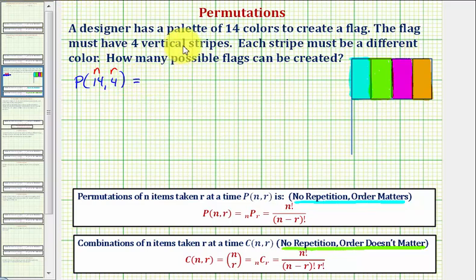So to evaluate this, we would have 14 factorial, divided by 14 minus four factorial. So simplifying, we have 14 factorial divided by 10 factorial.